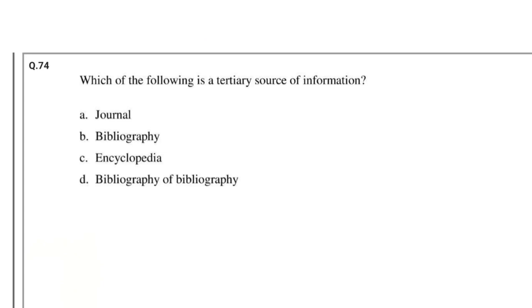Question number 74: Which of the following is a tertiary source of information? Options: Journal, Bibliography, Encyclopedia, Bibliography of Bibliography. The answer is Bibliography of Bibliography.